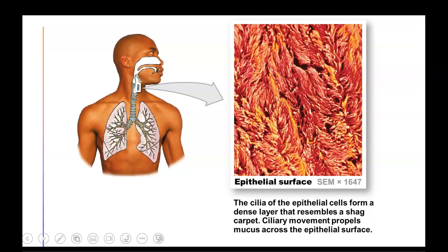The cilia work in an oar-like or wave-like motion to move mucus containing possible microorganisms up into the pharynx, where it's swallowed down the esophagus to the stomach, where gastric juices destroy those microorganisms.